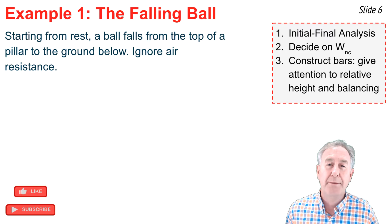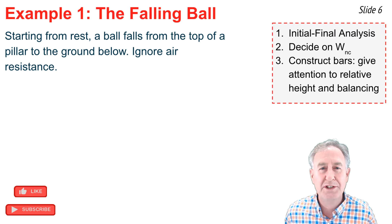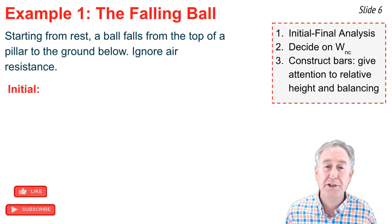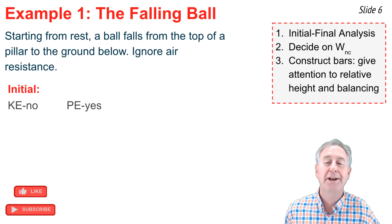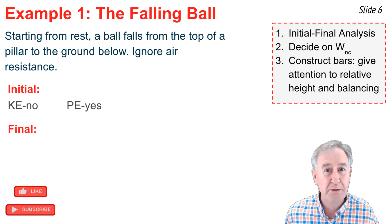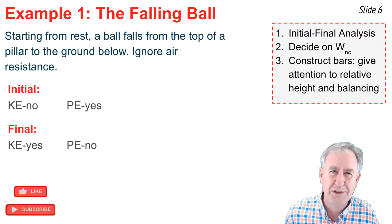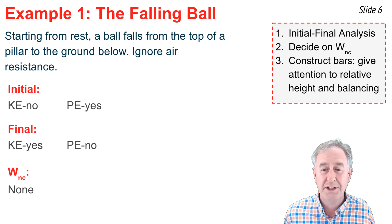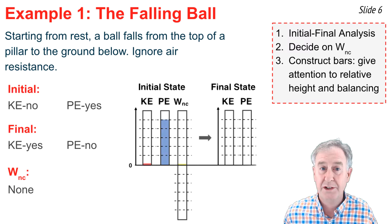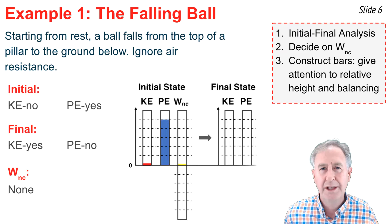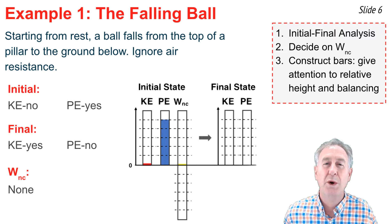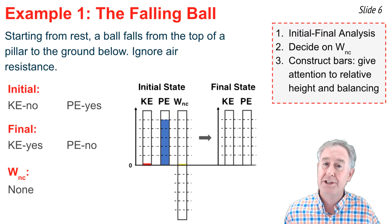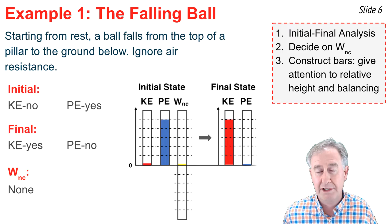In example one, starting from rest, a ball falls from the top of a pillar to the ground below — ignore air resistance. In the initial state, the ball is at rest on top of the pillar: no kinetic energy, but it has potential energy. In the final state, the ball is just above the ground and moving fast, so it has kinetic energy but zero potential energy. No work is done by non-conservative forces — only gravity acts, and it's conservative. So I show five units of potential on the left, and five units of kinetic on the right.